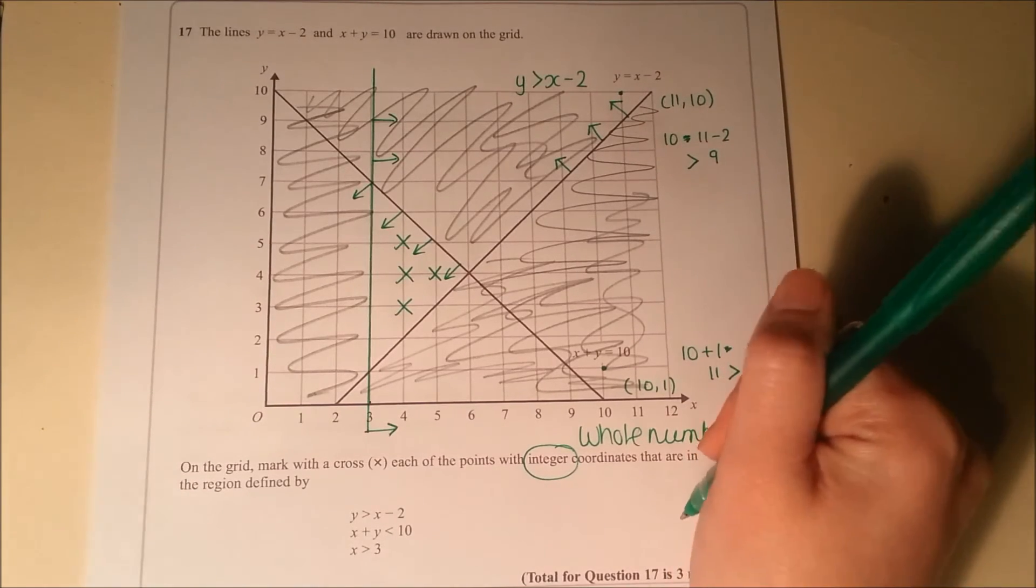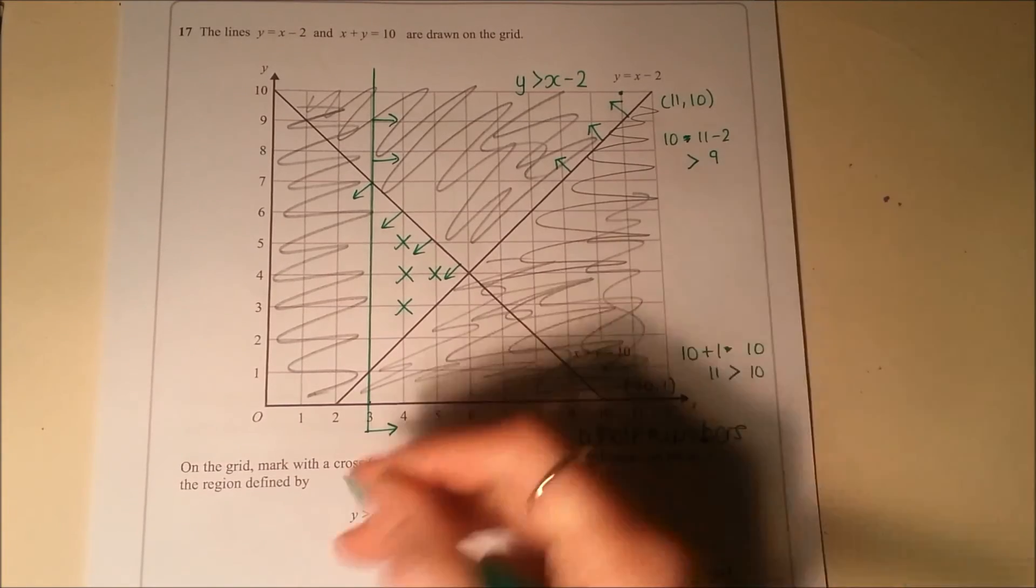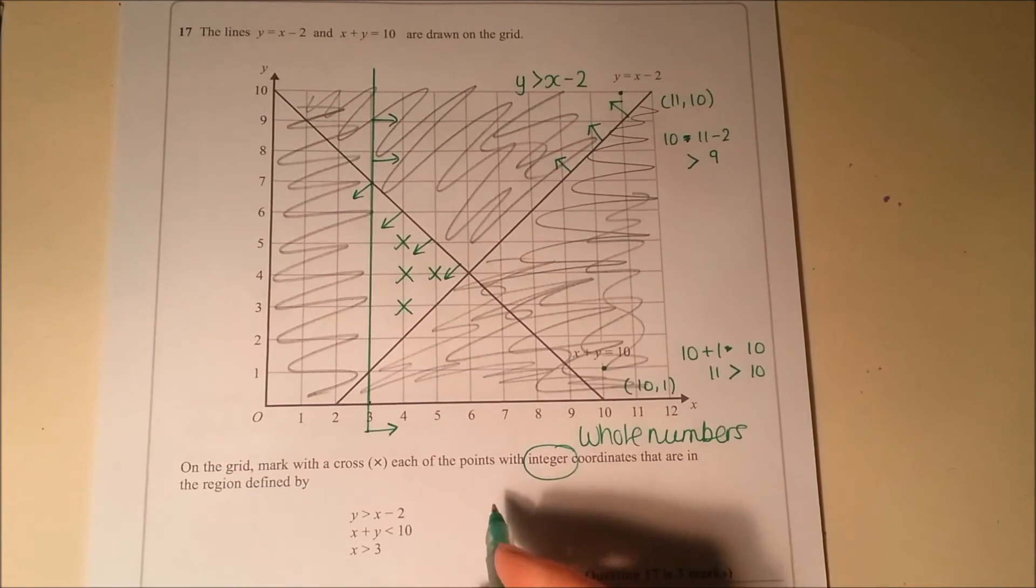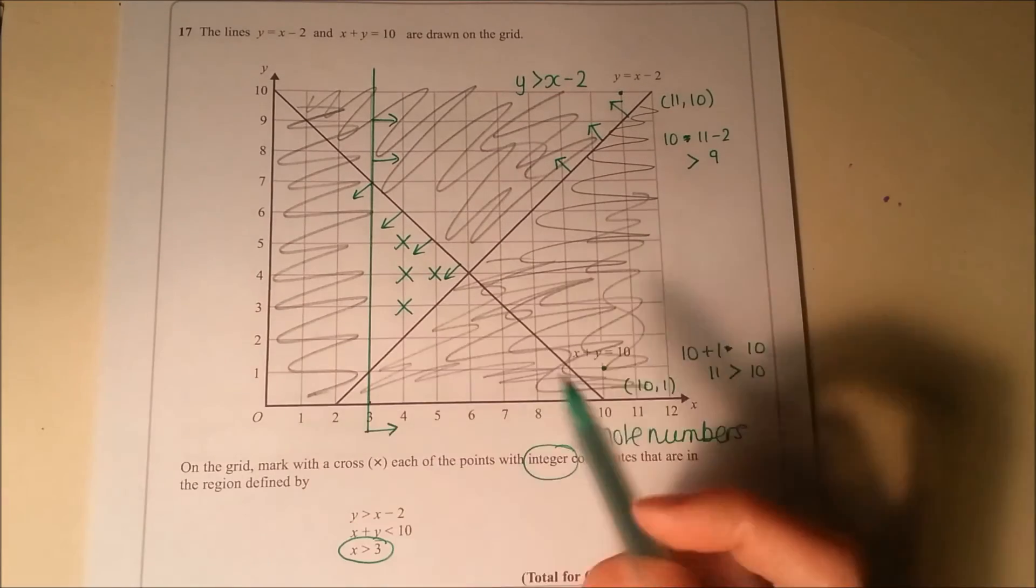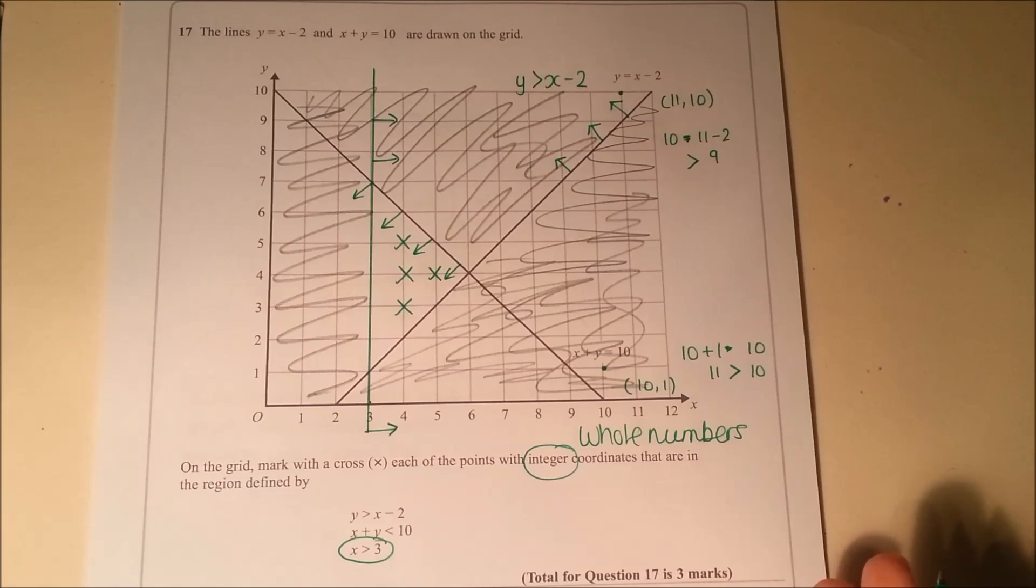It's quite a tricky question, this. It might be worth thinking if you're in an exam, can you pick up maybe one or two marks on it? So could you draw that on the graph and show the points that satisfy just that bit? Because you might pick up a mark for it.